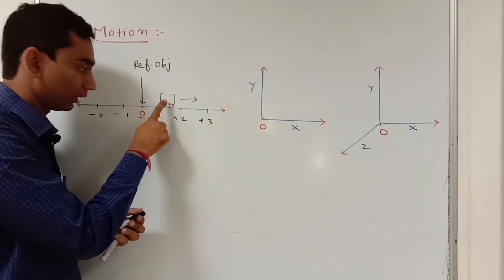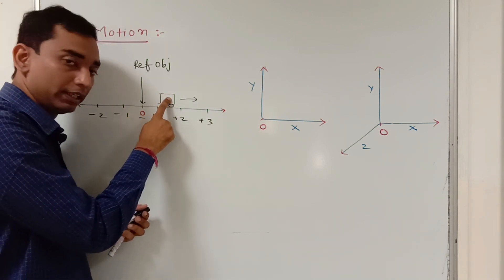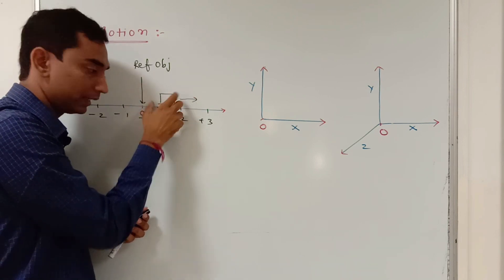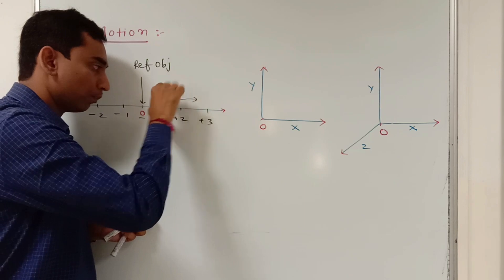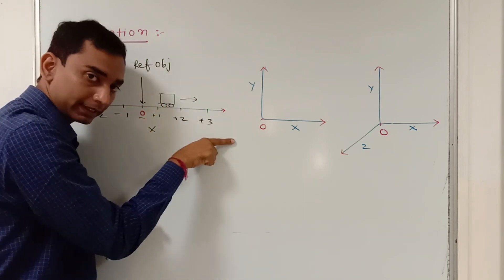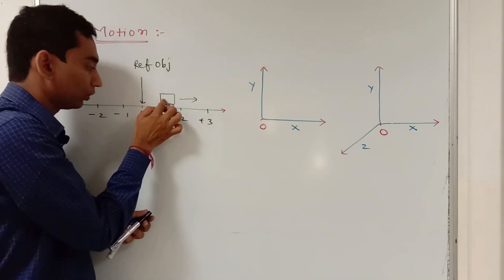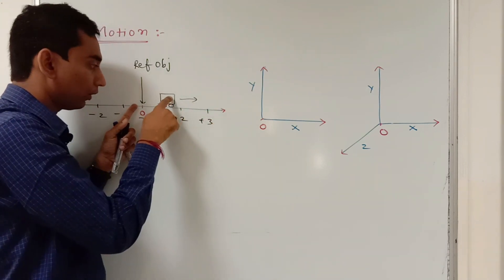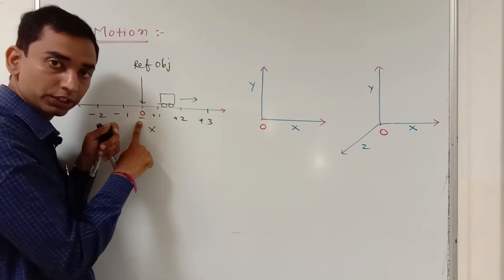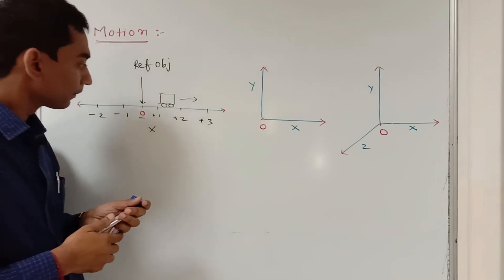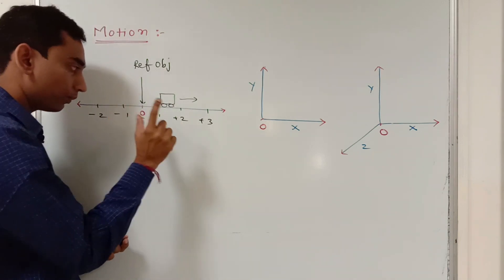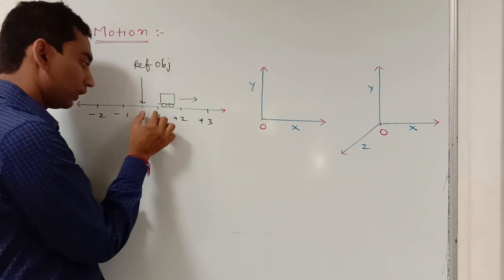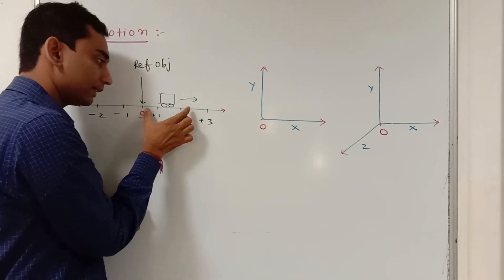If this body moves in this direction, then the position of this body with respect to this zero is going to continuously increase, because now this body is moving in a straight line along the positive x-axis. So the distance from this zero is going to continuously increase. As you can see, only one coordinate is changing — there is no y, there is no z, so only the x-axis is increasing.